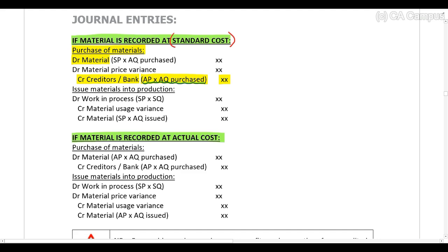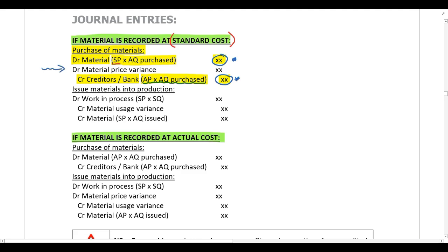In this situation, material is recorded at standard cost, so when you debit material you can't record it at actual price × actual quantity purchased. Instead, material is debited at the standard price multiplied by the actual quantity purchased. Since you're debiting material at the standard price but crediting the creditor or bank at the actual price, these amounts are different — the reason for the difference is the material price variance. Therefore, if material is recorded at standard cost, the price variance arises on the date of purchase and is based on the quantity purchased, not the quantity used in production.